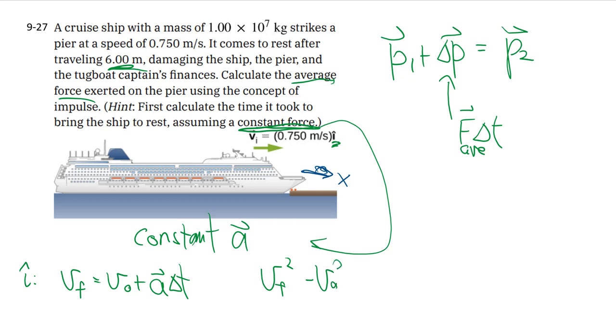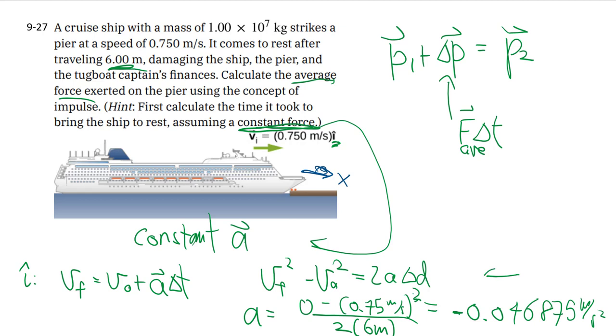Since we do not have the time, we have to use this one. Vf is zero because you're full stop. The initial speed is as given, divided by 2 times 6 meters, which is my displacement. No surprise that we get a negative, because we expect the acceleration to be slowing the boat down.